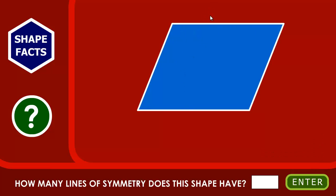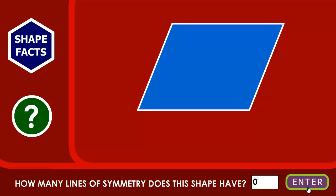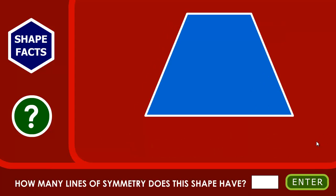This is a parallelogram. So if I fold it in this way, it won't match. I don't think we can fold a parallelogram at all. I think I'll write zero here — a parallelogram has no lines of symmetry. Now this is some sort of a trapezium shape. We can fold it only in one way, here in the middle. I don't think we can fold it in any other way. So one line of symmetry.